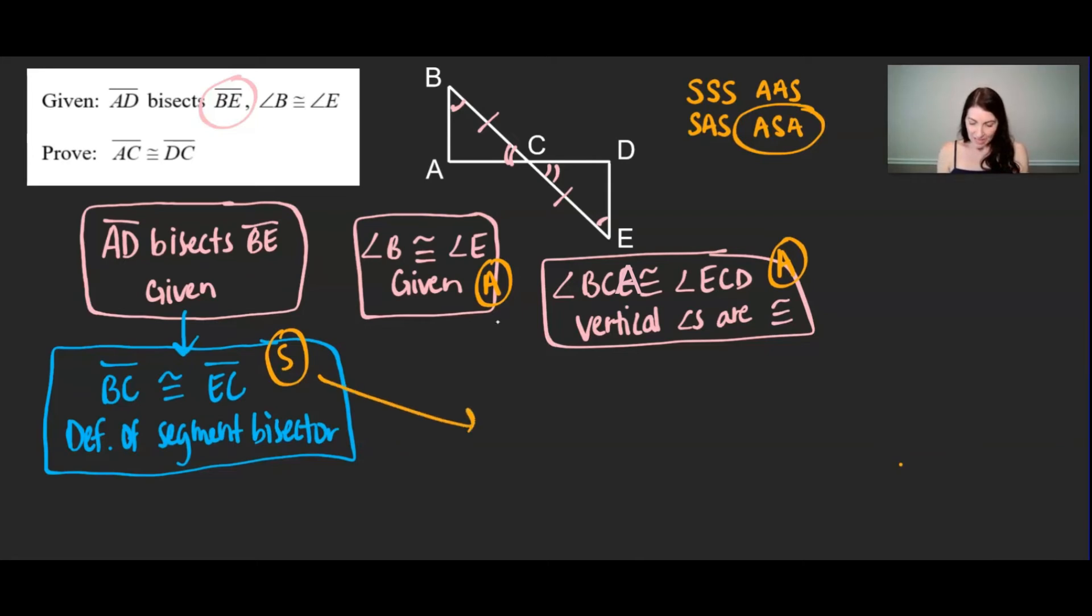So I'm going to bring these together and say because of this I know that triangle BCA is congruent to triangle ECD. Oops I forgot to put the triangle symbol in there let me head back and do that. And the order that I list out those vertices they have to be in corresponding order. So if I went BCA I then have to list it out corresponding triangle ECD. And I know those triangles are congruent because of angle side angle.